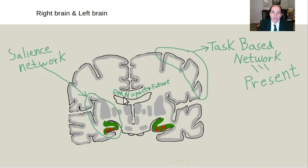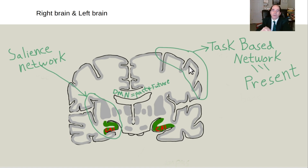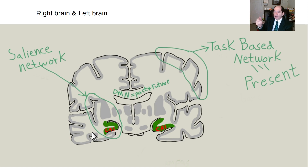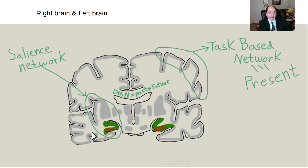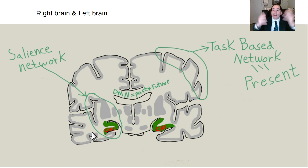So the three major networks: the default mode network maps past and future — time traveling. The task-based network engages you in the present. The salience network responds to distractions. The brain maps cognitive space through analogies and comparisons — that's how we categorize everything, comparing things and judging similarities and differences.